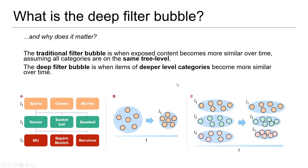What we are introducing in this work is the deep filter bubble. The deep filter bubble is a phenomenon that can be formed when users are exposed to only a narrower extent of content at deeper categories. So if a video has three layers of categories, then the user will only see the narrower categories at lower levels over time.